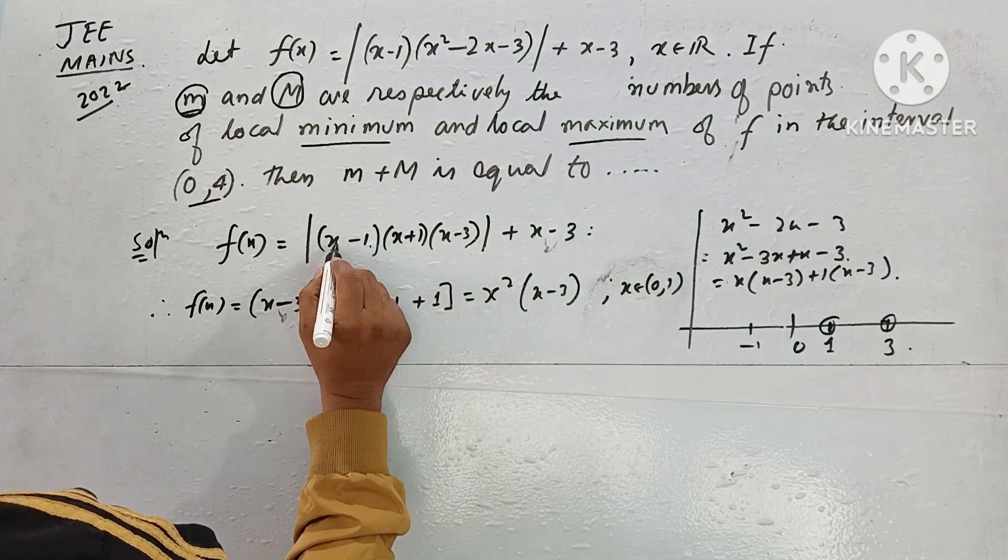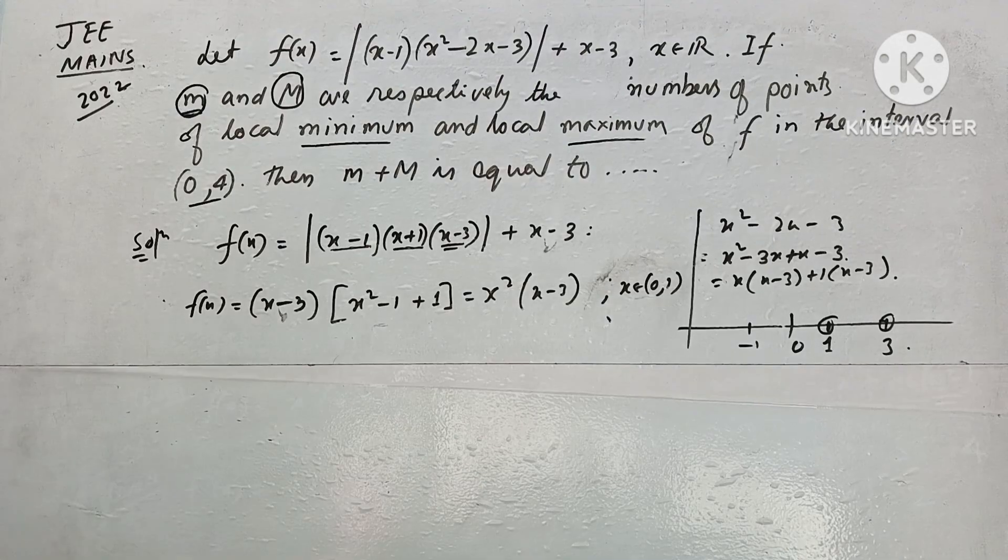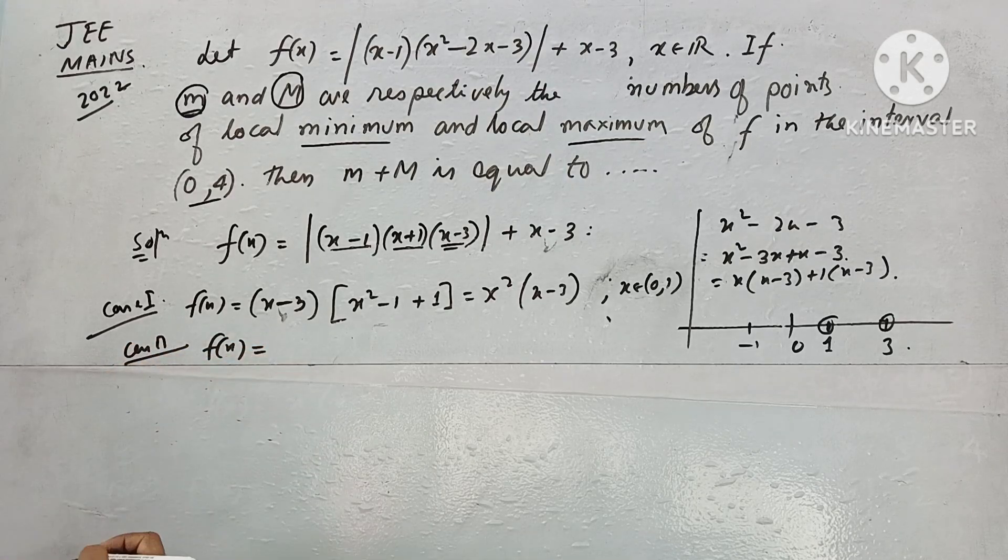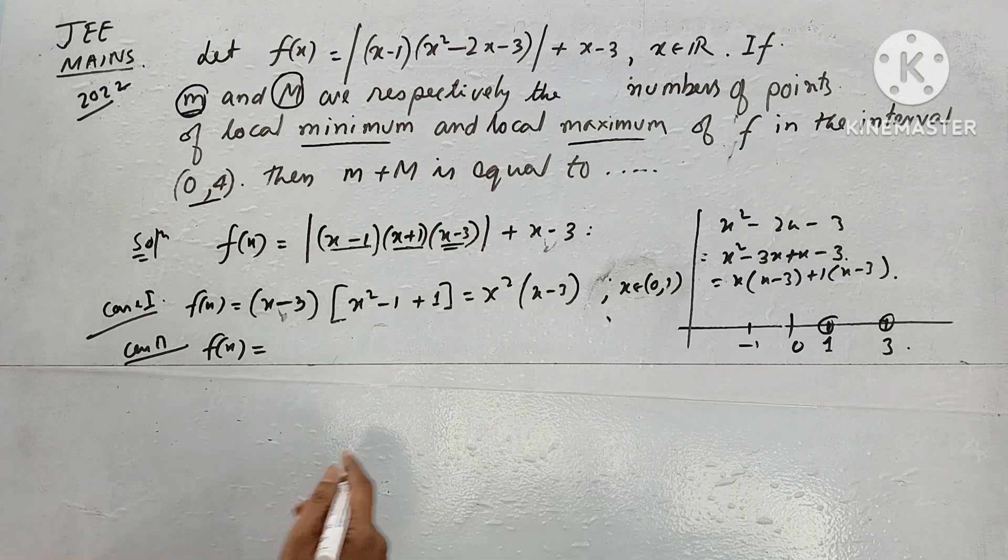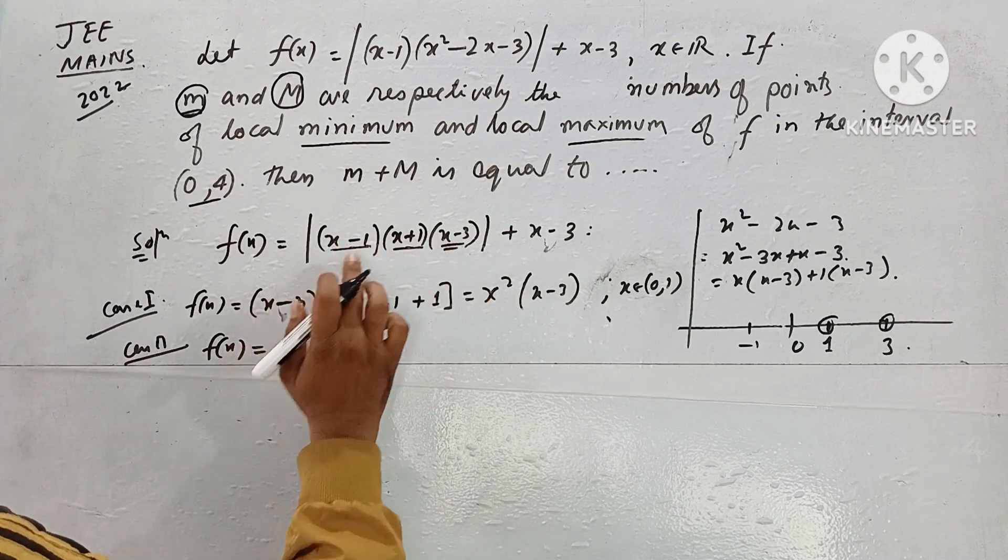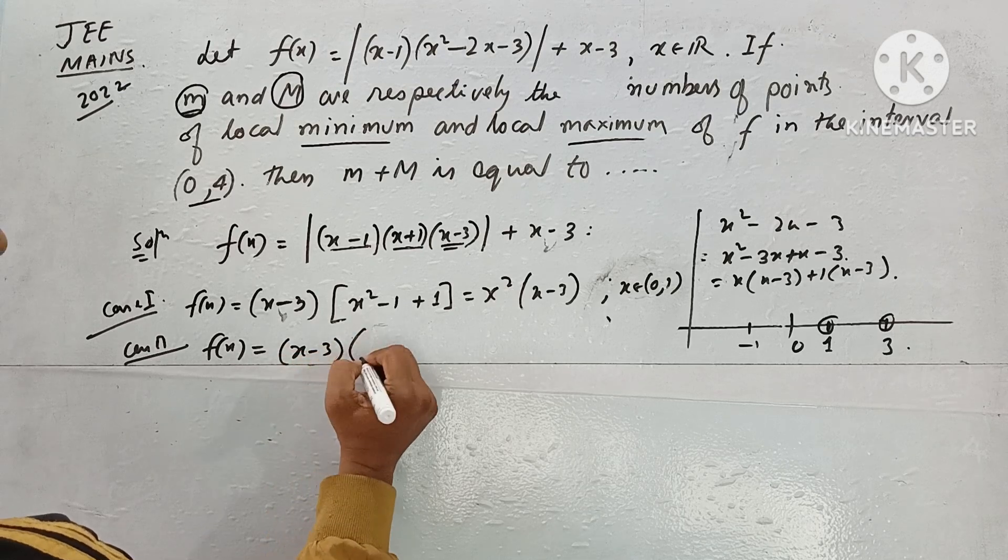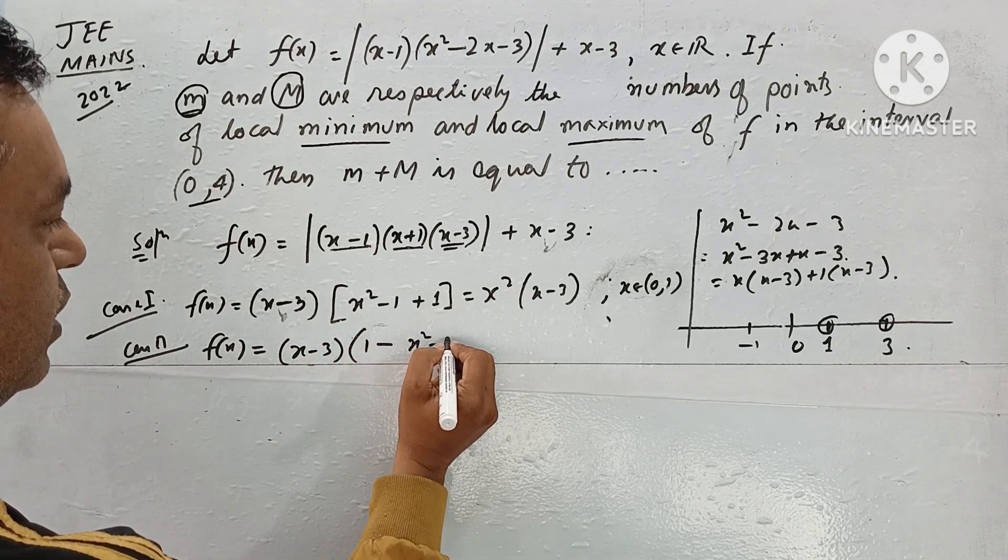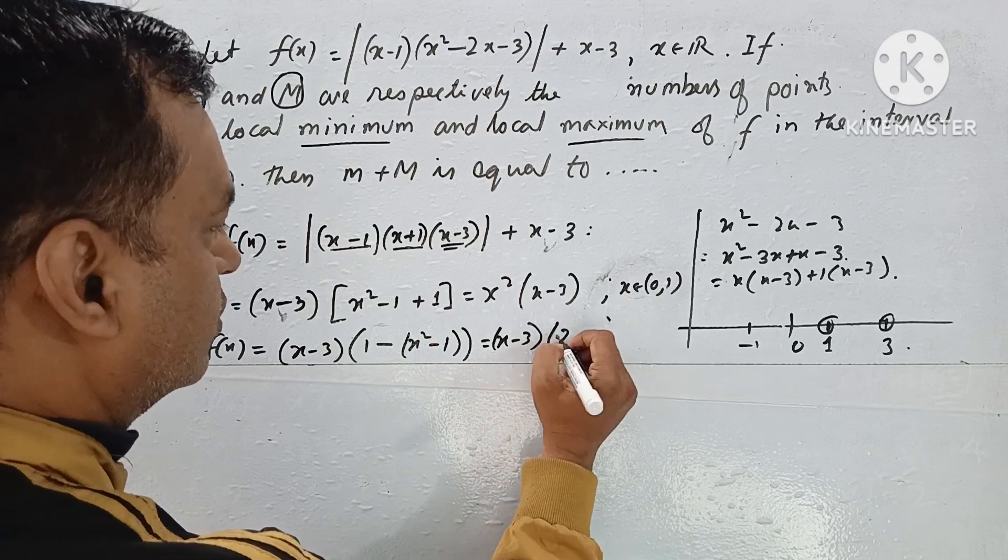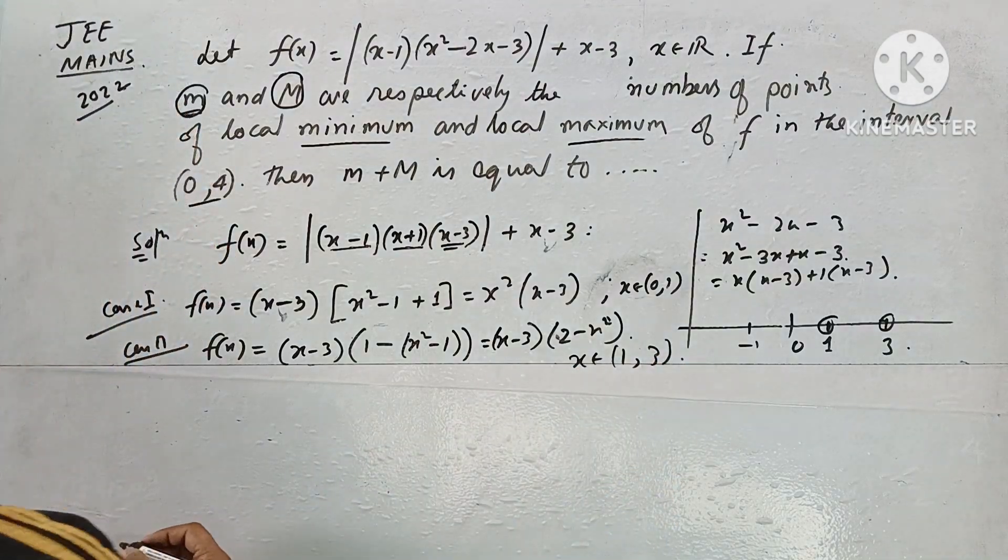Then for (1,3), we need to check. When in (1,3), this is positive, this is positive, this is negative, so the function is negative. Therefore taking Case 1, when x is in (1,3), this is positive, this is positive, this is negative, so it's negative. The sign changes. Taking (x-3) common: 1 minus (x²-1), which becomes (x-3)(2-x²), when x belongs to (1,3).